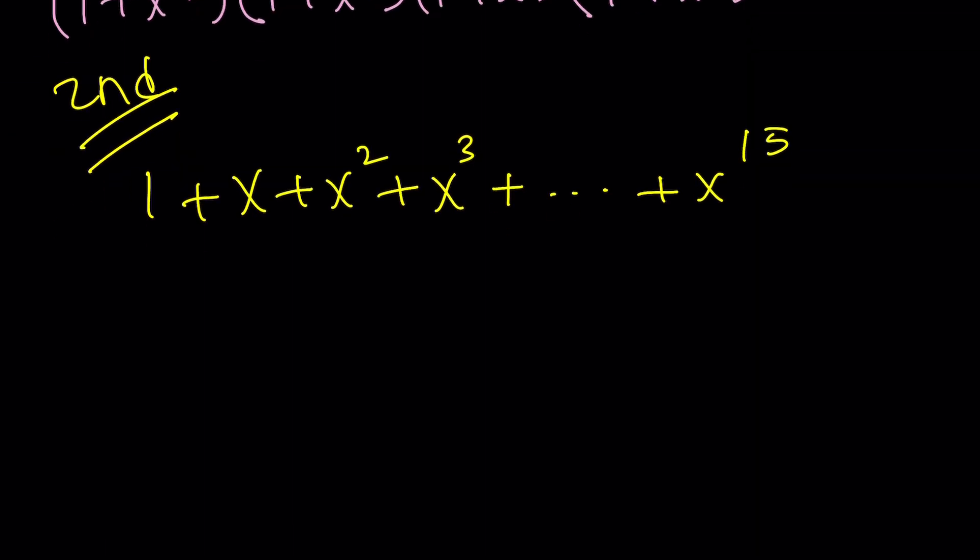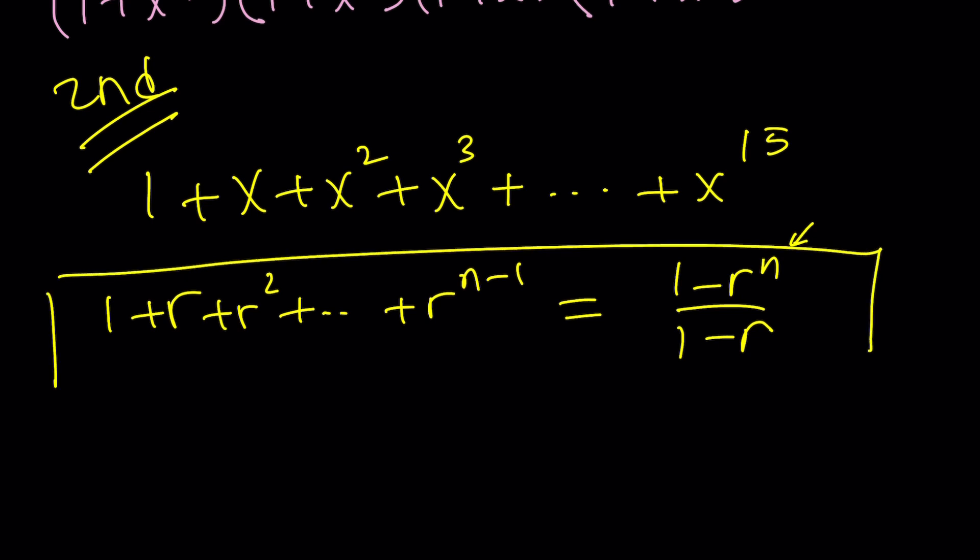The second method depends on the sum of a geometric series. Whenever you have something like 1 plus r plus r squared dot dot dot r to the power n minus 1, this is 1 minus r to the n divided by 1 minus r. The reason why we finish with r to the power n minus 1 is because we want n terms. The number of terms is n. Let's apply it here.